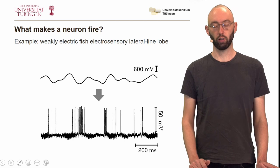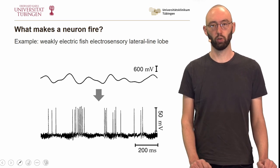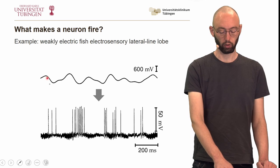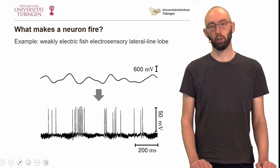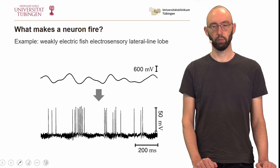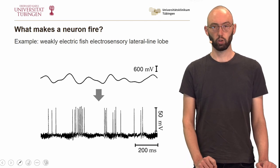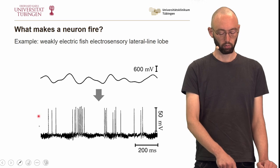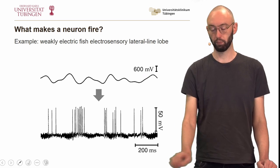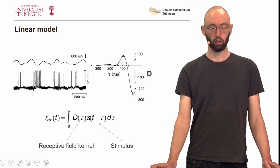One example here could be weakly electric fish in the electrosensory lateral line lobe, which have an electrosensory organ able to sense fluctuations in the electric field around them, and the neurons react to that. If we have a stimulus — the modulation of the electric field around the fish — and record from the activity of a certain unit in these neurons, we find that it spikes sometimes. If you look closely for relationships between these two signals, you will see that these spikes occur mostly on the falling phase of the electric field.